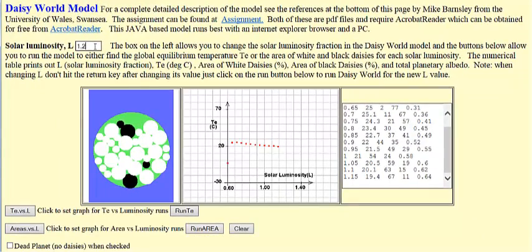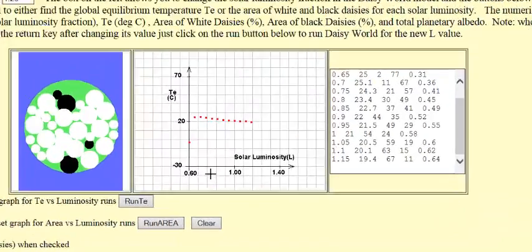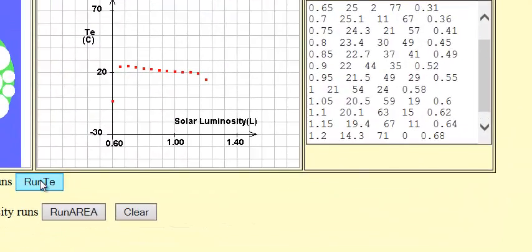And 1.20. 14.3, 71, no black daisies, and a planetary albedo of 0.68.